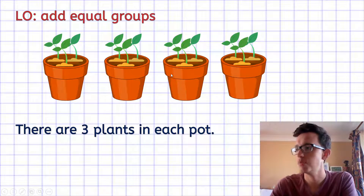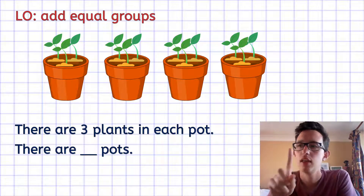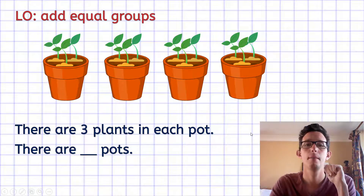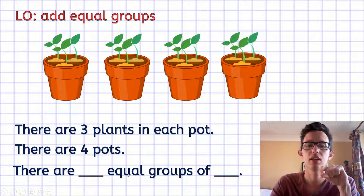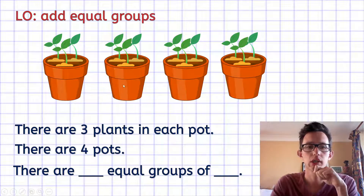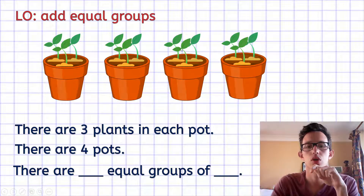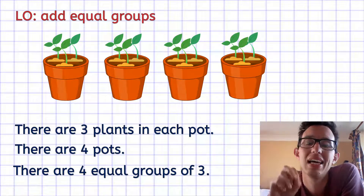There are three plants in each pot. The second part: how many pots are there? There are one, two, three, four — four pots. So there are four equal groups, and each of those groups has three in it. There are four equal groups of three.